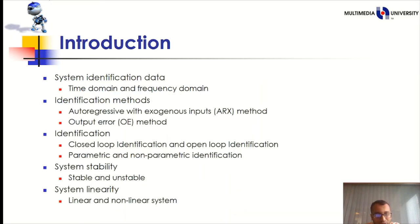System Identification has two types, named time domain data and frequency domain data. The ARX, AR, MAX, OE, and Box-Jenkins are the most popular linear model structures for system identification in the presence of noise. More accurate prediction can be obtained by increasing the order of the model for the ARX method. The white noise can directly disturb the plant output for OE model identification. Close loop identification and open loop identification, parametric and non-parametric identification system. Stability is most important. Researchers have worked with stable systems for better characterization. System linearity is also important for system identification. Linear system is more suitable than the non-linear system.